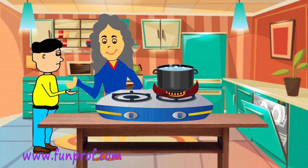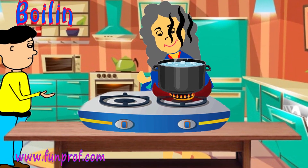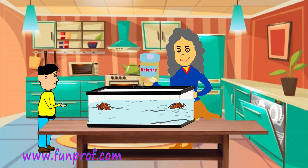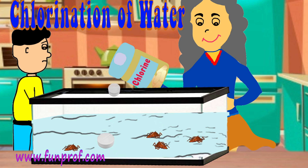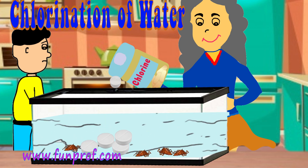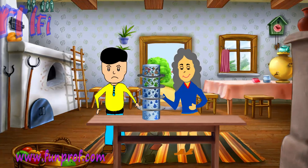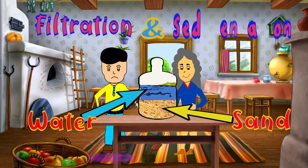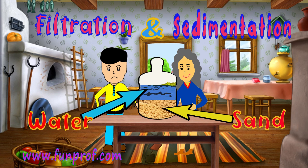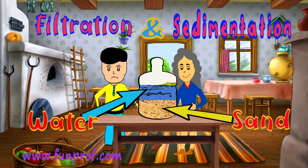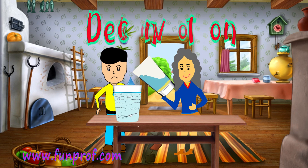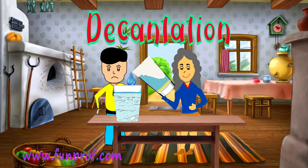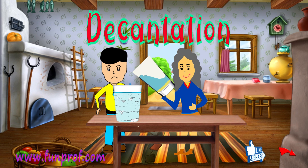How do we filter water? There are five methods. First is boiling the water — this kills all the germs. Second is chlorination — we put chlorine in water so that it kills all the germs. Third is filtration. Fourth is sedimentation — if the water contains sand, the sand will settle down and the water will come up, giving pure water. Fifth is decantation — we pour this water into a jar, and this is pure water.